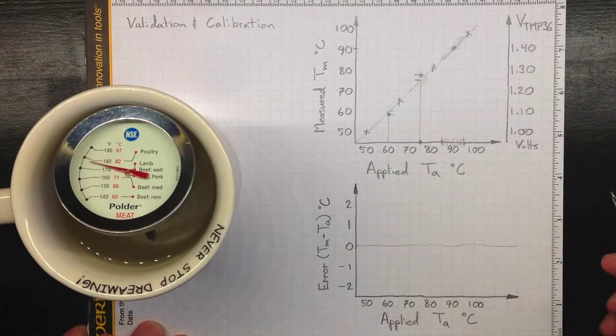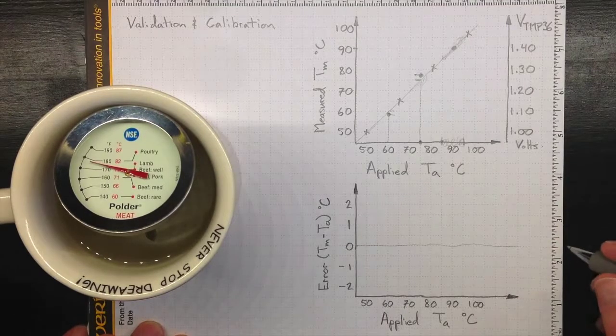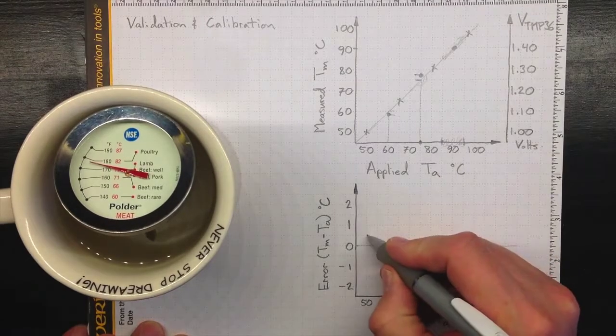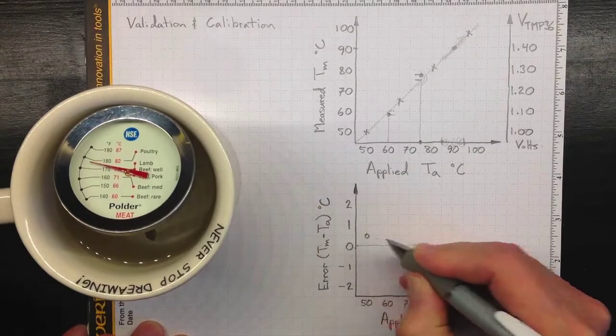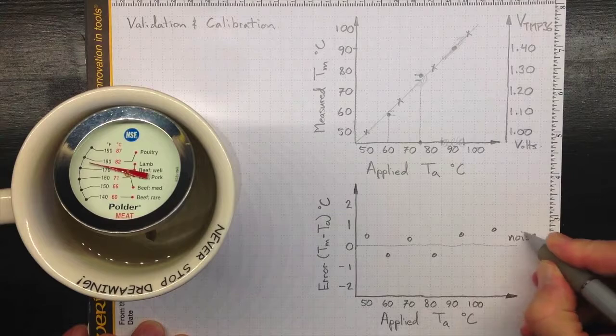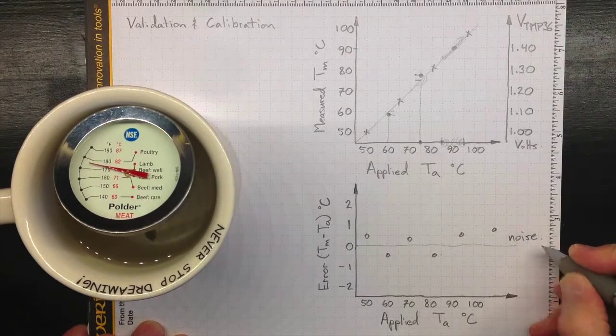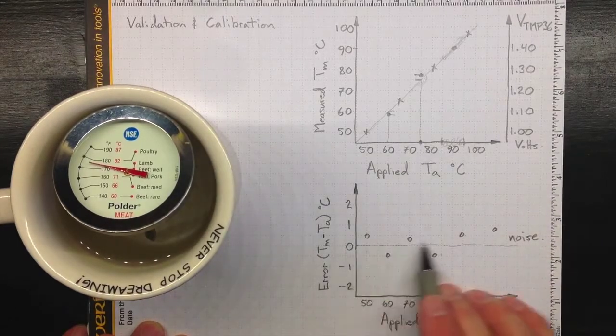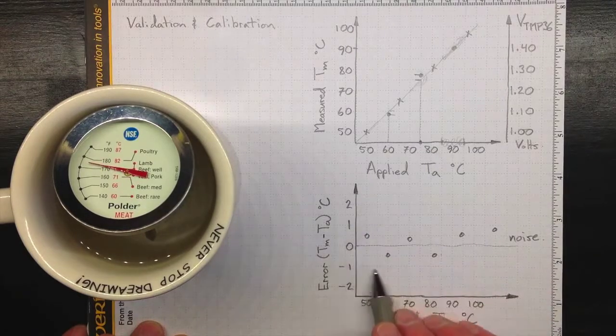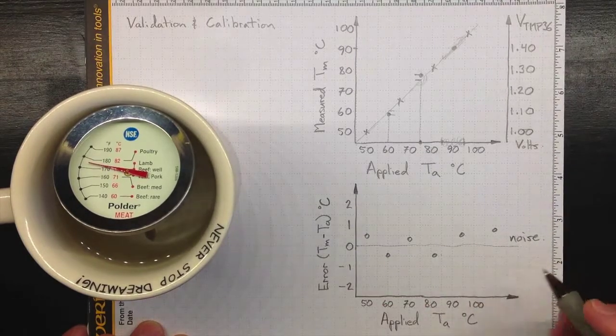However, our measurement isn't going to be perfect. Inevitably, there's going to be some noise. We might actually find that our data points look something like this. This tells us that our calibration, our instrumentation is pretty good, but we've got some noise, and all of our data points are still within plus or minus one degree Celsius. That's pretty good.